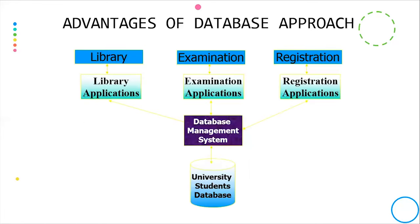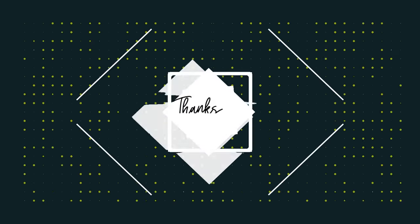The advantage of the database approach is that we create a single database for the university. After that, we attach each office — library, examination office, registration office — to it, and we save our data in the university student database. The library, examination, and registration departments all access the same university student database table.